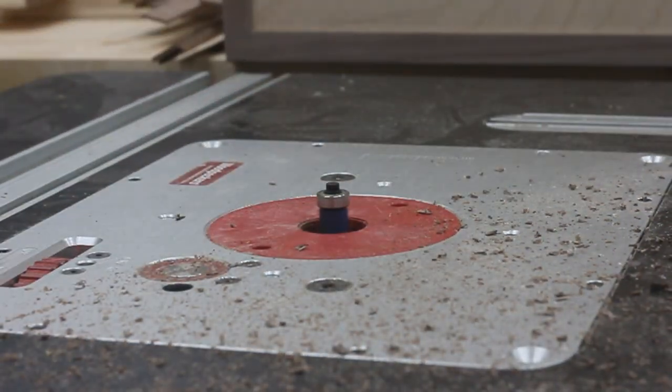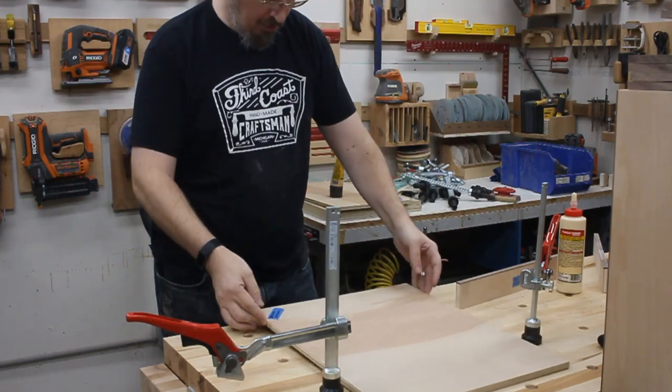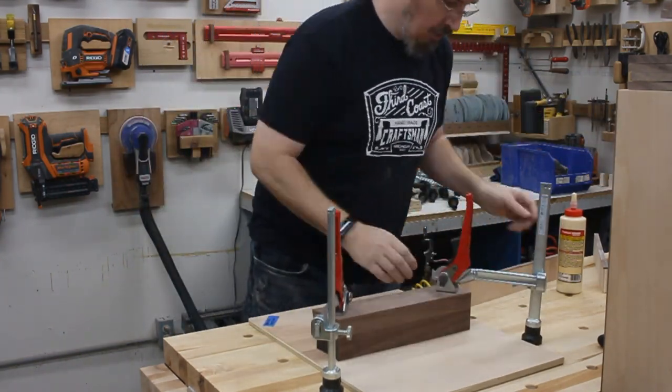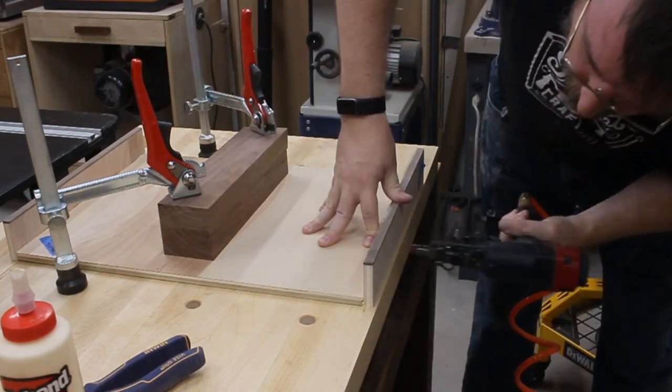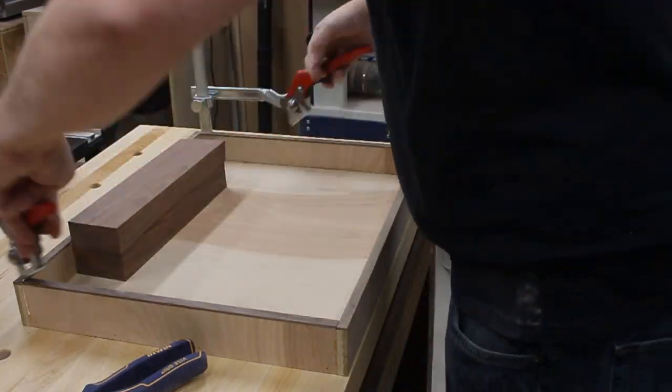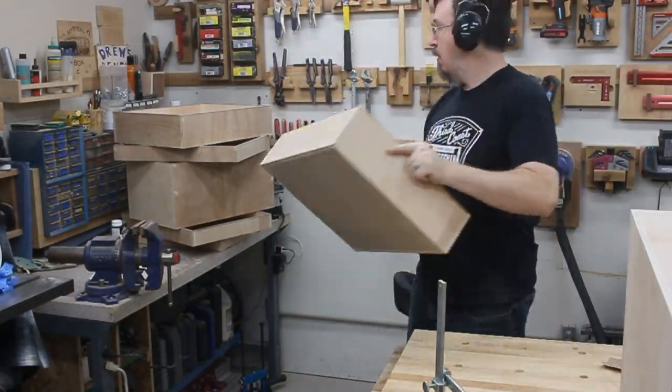At this point, I could actually start putting the drawer boxes together. I just clamped them down to the bench surface after putting on some glue, and then I could just tack them all together with some brad nails. Nothing fancy here. A bit of sanding to smooth everything out, and that was that.